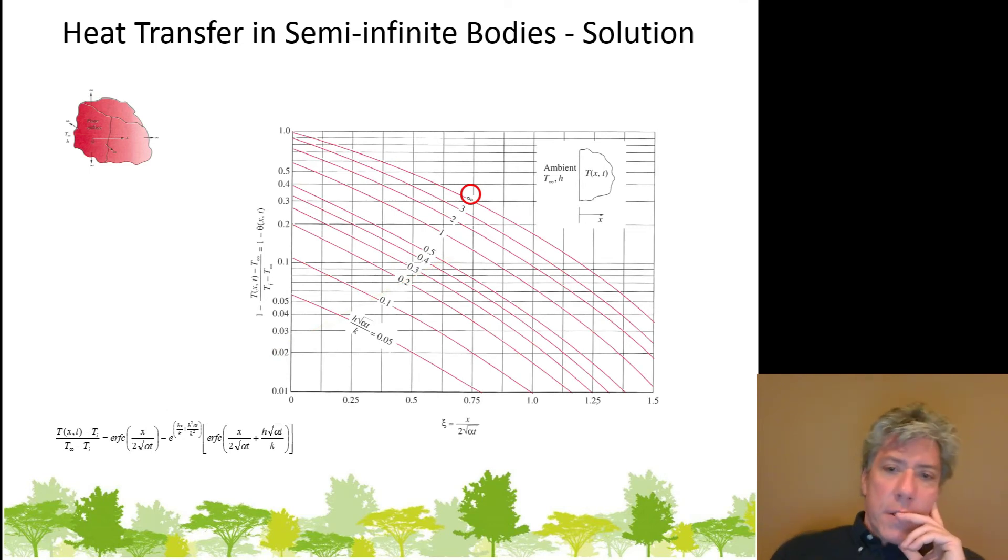So this equation really is contained in the figure. What about this infinite term? What is that? Well, that's h root alpha t over k. This sounds a lot like what we had before. Remember when we said, what does it mean when it looks like the math is saying that the convective heat transfer coefficient is infinite? Well, this infinite line is a very special line.